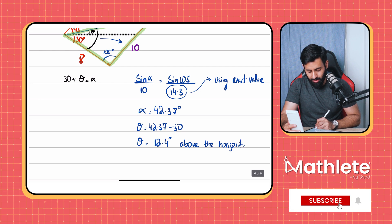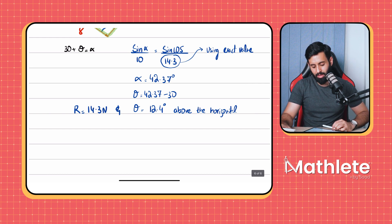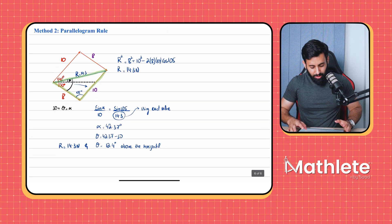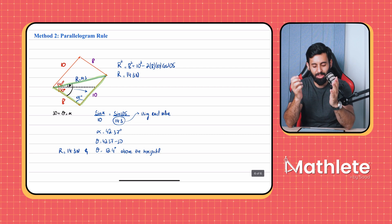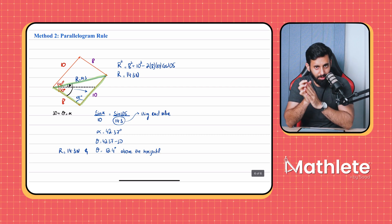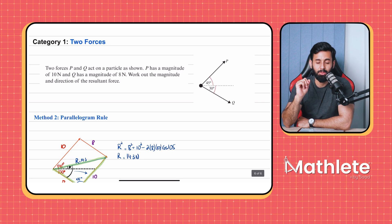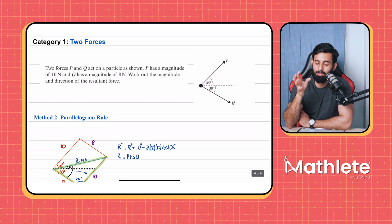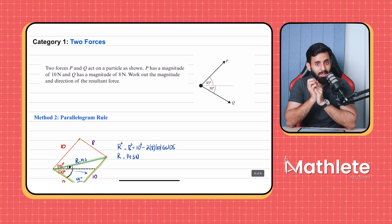The final answer is 14.3 newtons at 12.4 degrees above the horizontal. Those are the two methods: resolving forces and the parallelogram rule. I suspect you found the parallelogram rule easier, but let me know in the comments. In the next video we'll solve practice questions for this category, and after that we'll move to category two — three forces that may or may not be in equilibrium.